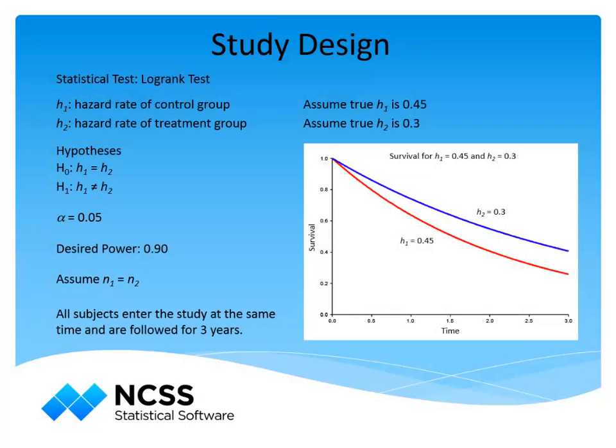Suppose we are planning a study where a new, minimally invasive surgery technique is to be compared to an existing, more invasive technique. The purpose of using PASS in this instance is to determine the number of subjects needed in each group to produce a log rank test with the power of 90% to detect a difference in hazard rates of the two techniques. Specifically, we will assume a true yearly hazard rate of 0.45 for the existing technique and 0.3 for the new technique.